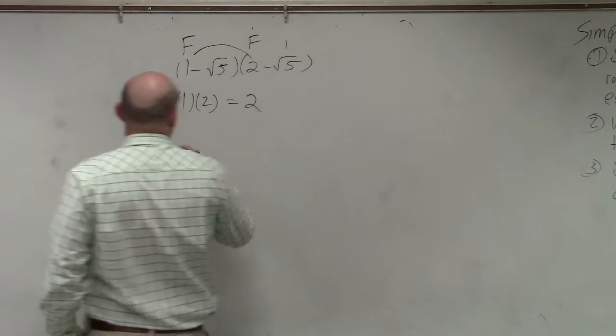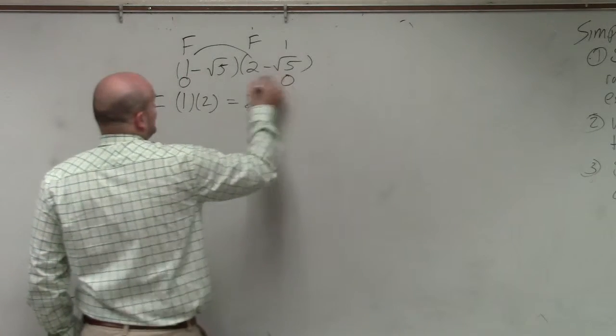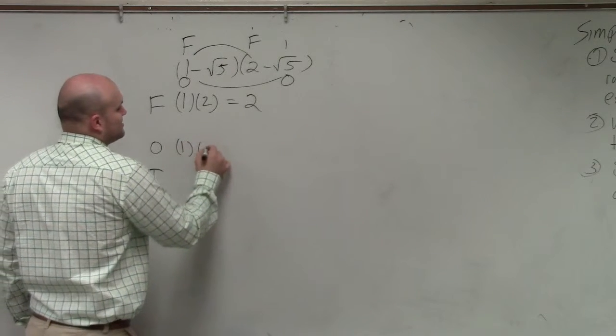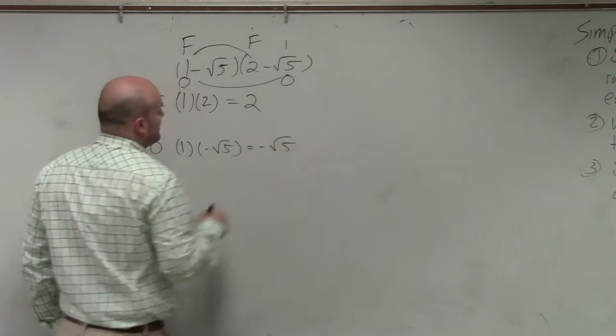Then the next thing we do is the outer. The outer is going to be the outside two terms. So that's 1 times negative square root of 5, which is negative square root of 5.